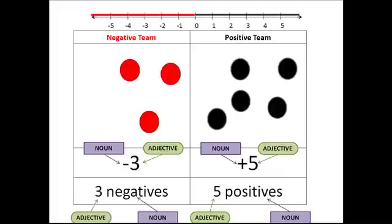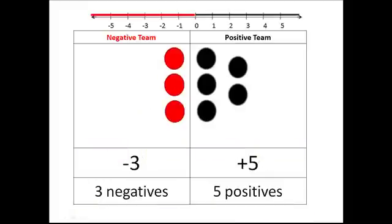Now a zero pair is essentially a tie. For every point the negatives get, as the positives have one point as well, you end up with a tie. Each one of those pairs is a zero pair. So we're going to rearrange our chips so that we can see our zero pairs a little bit better.